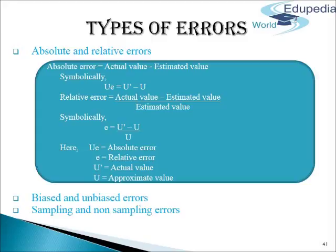Unbiased errors are not the result of any prejudice or bias. They are those which arise accidentally, just on account of chance, in the normal course of investigation. Unbiased errors are generally compensating in nature.